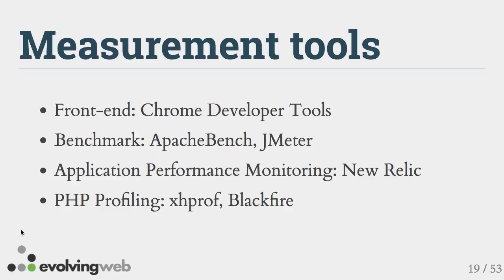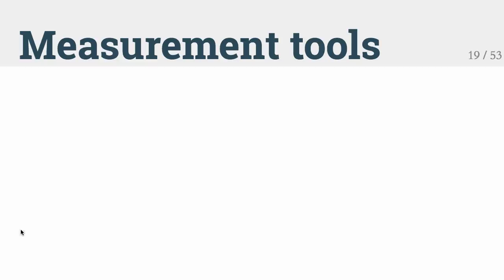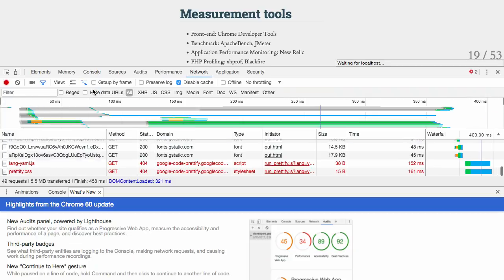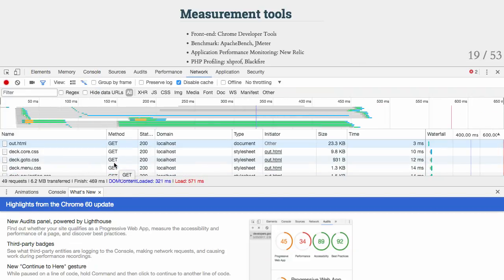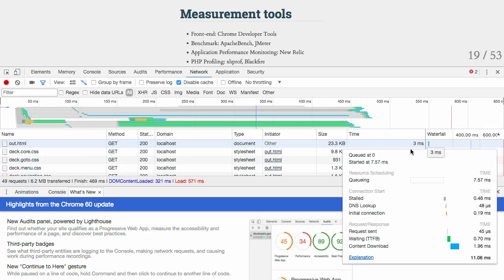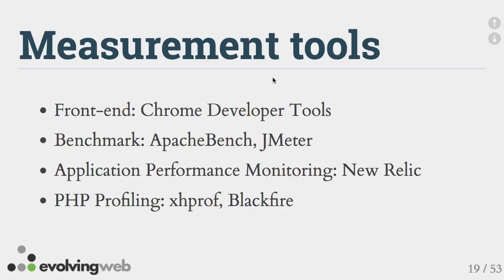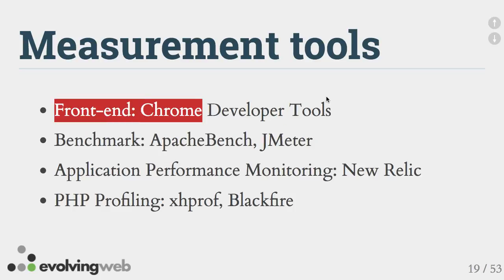For frontend performance tools, we start with Chrome Developer Tools — the network tab shows you what's going on, all the resources and how long they take. Get to know it well, we use it every day.